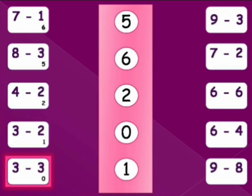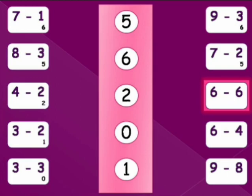Now, we will subtract the numbers on the other side. 9 minus 3 equals to 6. 7 minus 2 equals to 5. 6 minus 6 equals to 0. 6 minus 4 equals to 2. 9 minus 8 equals to 1.